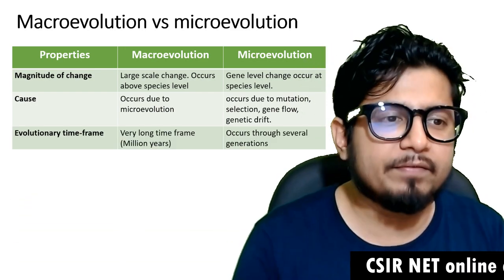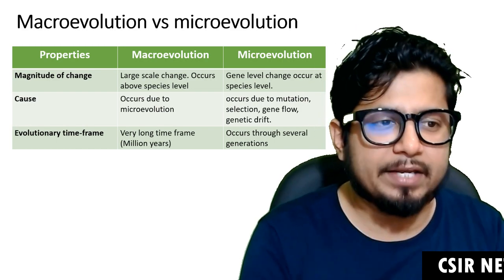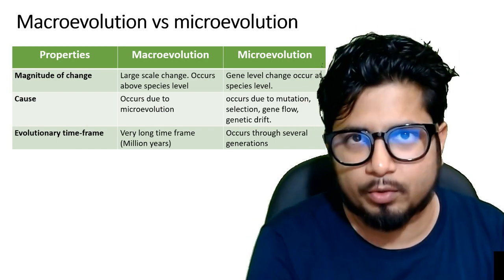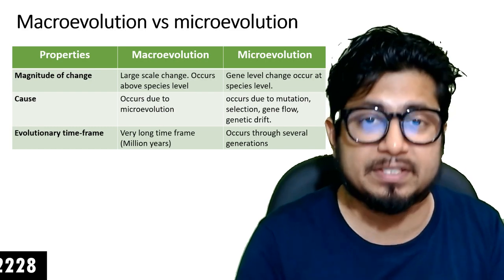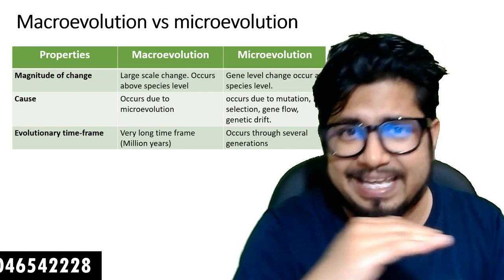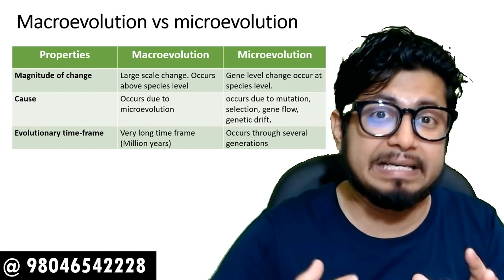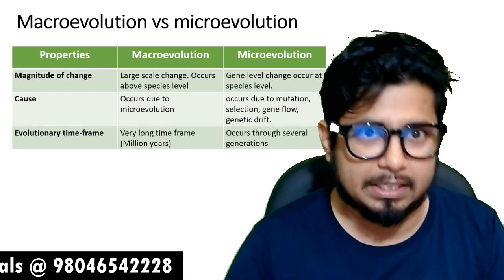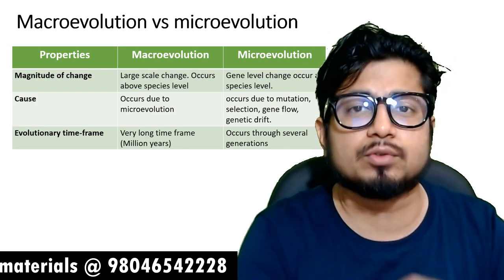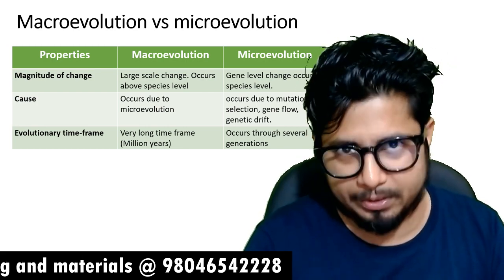Then we have evolutionary time frame. What is the evolutionary time frame for macroevolution? The macroevolution time frame is very long — generally the scale for macroevolution is counted in millions of years — while microevolution occurs through several generations in a particular species.